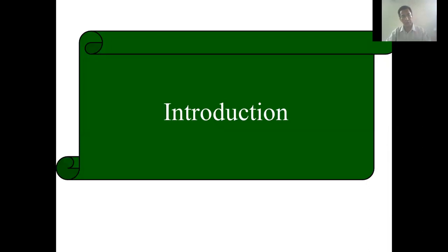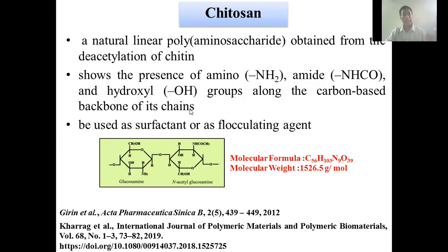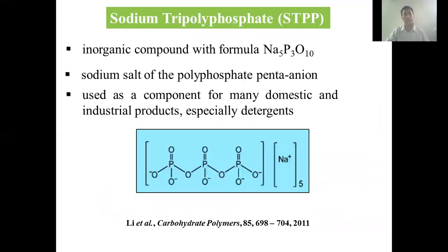Iron oxide is the hematite magnetite. Chitosan is a natural linear polyaminosaccharide obtained from the deacetylation of chitin. It shows the presence of amino and hydroxyl groups around the carbon backbone chain. Sodium tripolyphosphate is the sodium salt of polyphosphate anion, and this salt is used as a cross-linking agent.